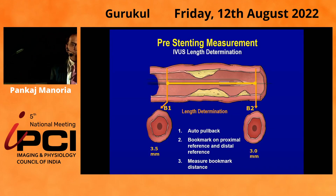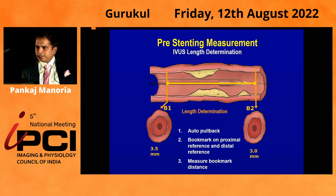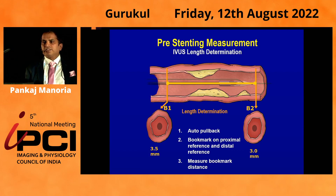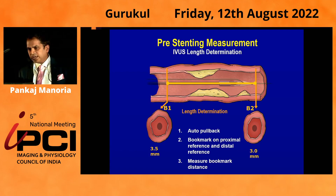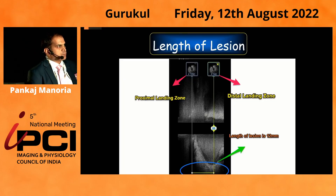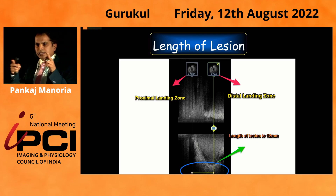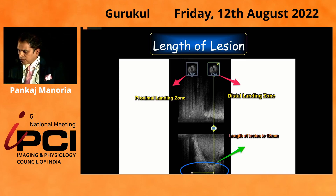How do you measure the length of the lesion? It's very simple. Mark the distal reference segment — the nearest normal segment distally — bookmark that, then mark the proximal reference segment — the nearest normal segment proximally — and measure the distance between the two bookmarks. It gives you the exact length of the lesion and the exact stent length needed. For example, in this case, the distal and proximal landing zones are bookmarked and the software automatically measures the length between the two bookmarks.